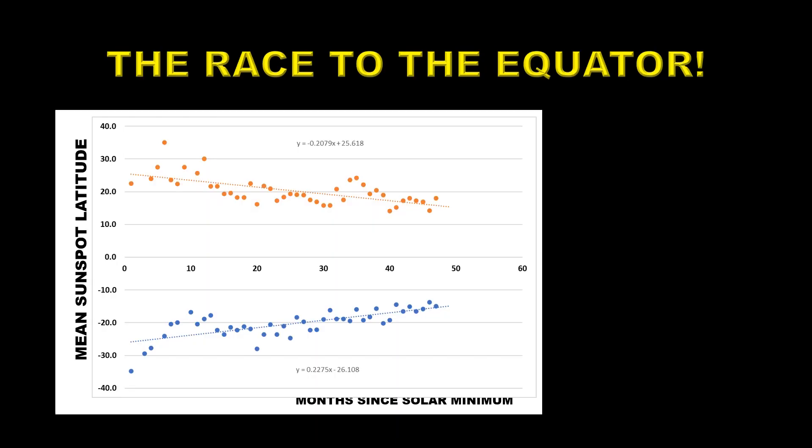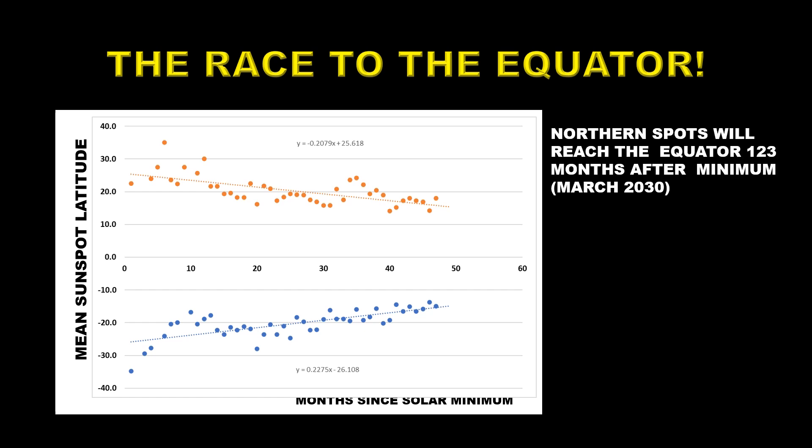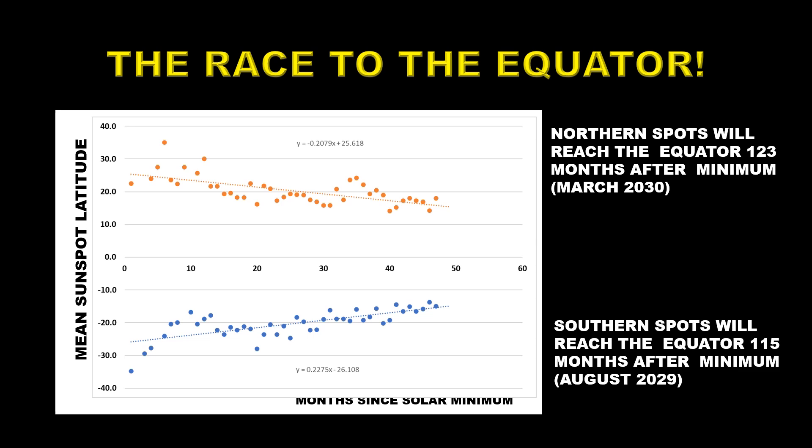I do analyses that some people don't do, and this is one of them. I've been tracking the average latitude of sunspots in both the northern hemisphere and the southern hemisphere — northern hemisphere in orange, southern hemisphere in blue. You can see they're both edging towards the equator, and from this we can derive a time when the sunspots will reach the equator, which will signal the beginning of solar minimum. In the northern hemisphere that would be about 123 months after minimum, putting it in March 2030. In the southern hemisphere I would put it at 115 months after solar minimum, which would be August 2029.